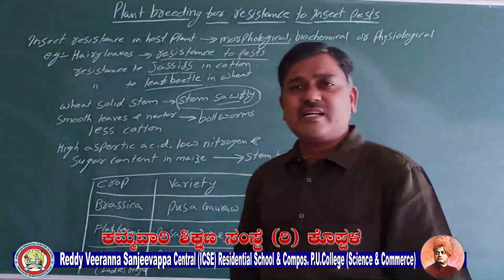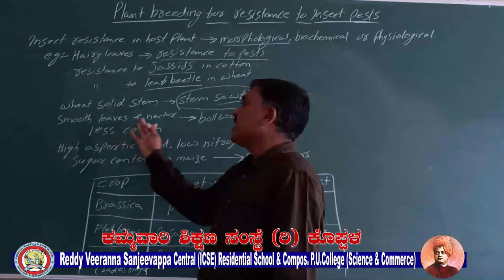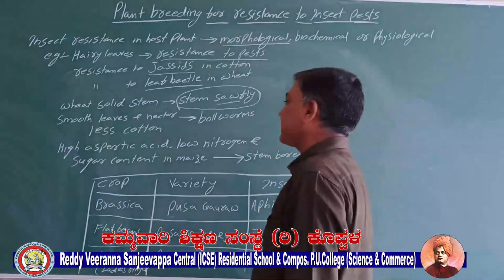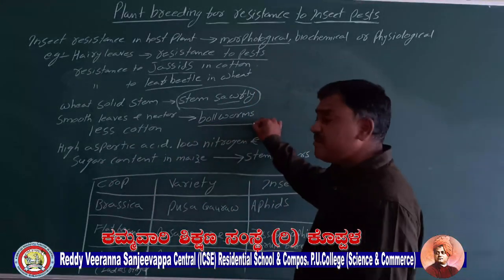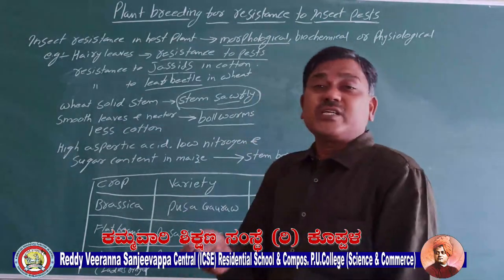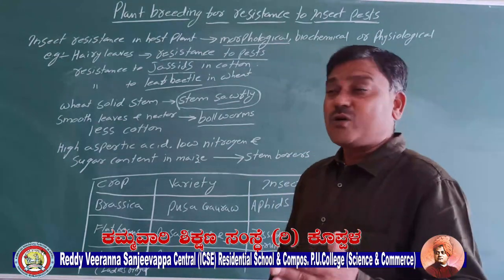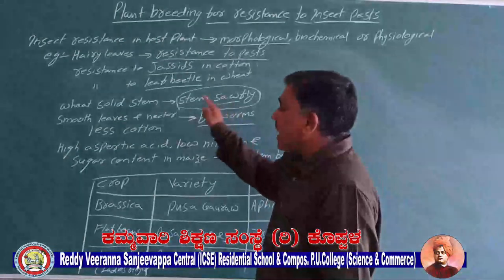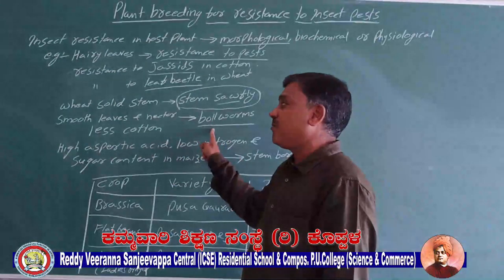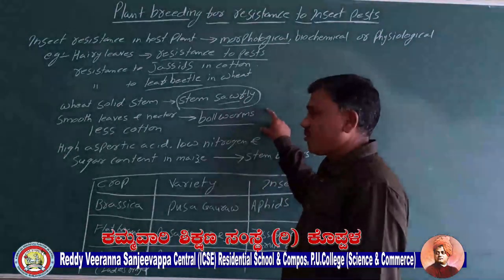If we take the example of smooth leaves and nectarless cotton, some varieties of cotton plants have very smooth leaves and nectarless flowers. This character is responsible for inhibiting the growth of bollworms. When bollworms bite the cotton bolls, they decrease cotton yield. So the presence of smooth leaves and nectarless flowers makes the plant resistant to bollworms.